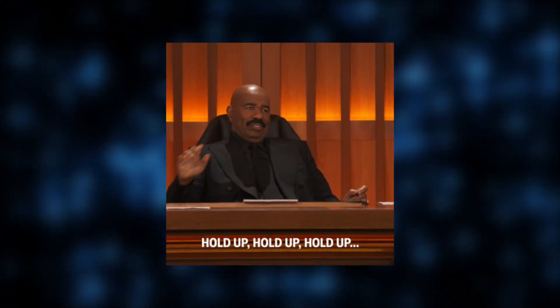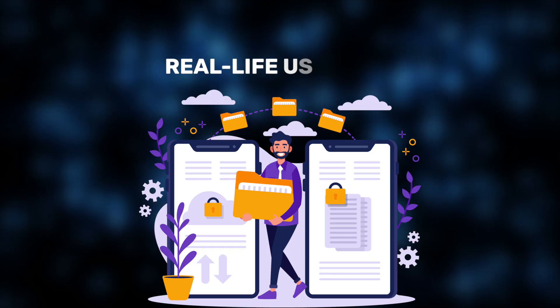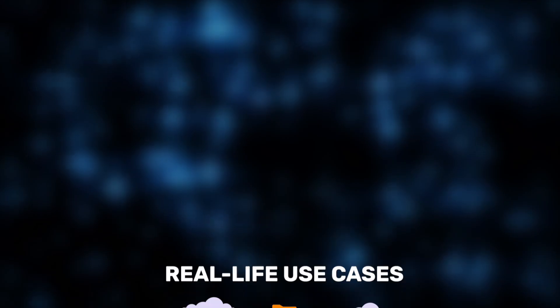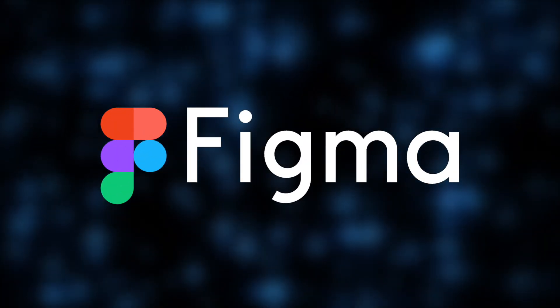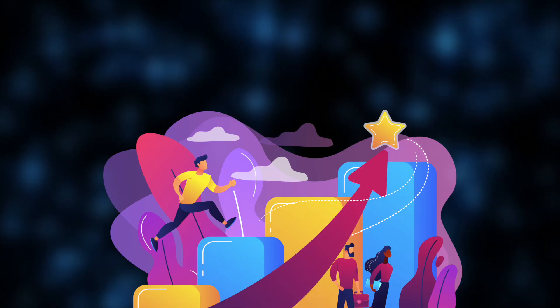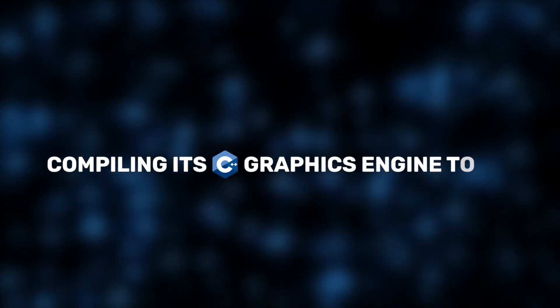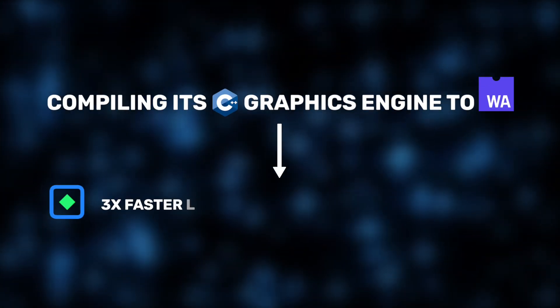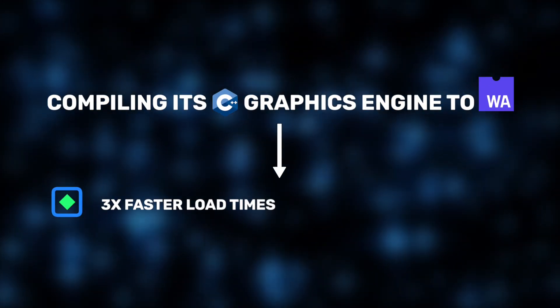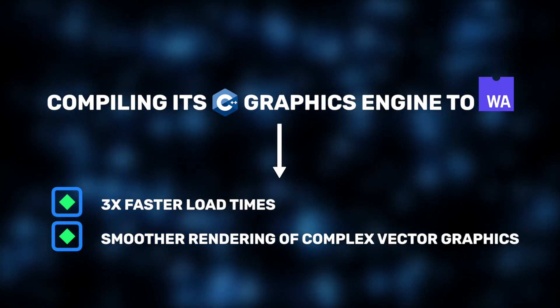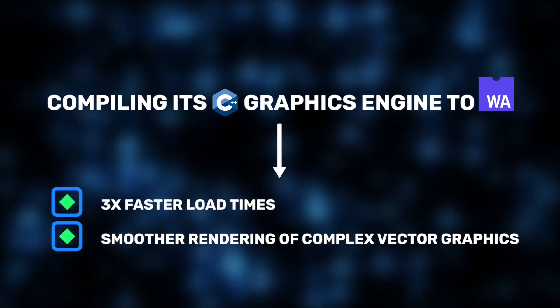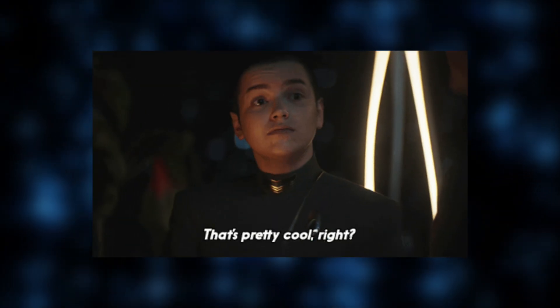Now it's time for the star of the show — real-life use cases. Figma is a standout example of WebAssembly in action. To boost performance, the team compiled its C++ graphics engine to Wasm, resulting in three times faster load times and smoother rendering of complex vector graphics, all within the browser.